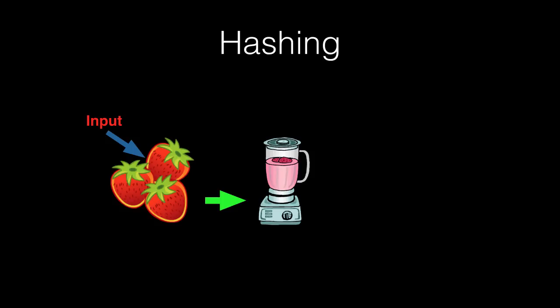Let's say you have some strawberries and you want a smoothie. That is your input. You'll put the strawberries into a blender. That blender is an algorithm or a mathematical function.